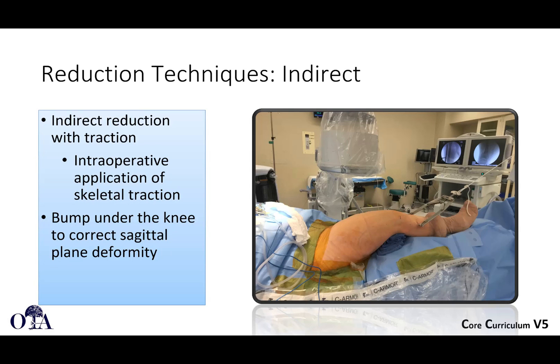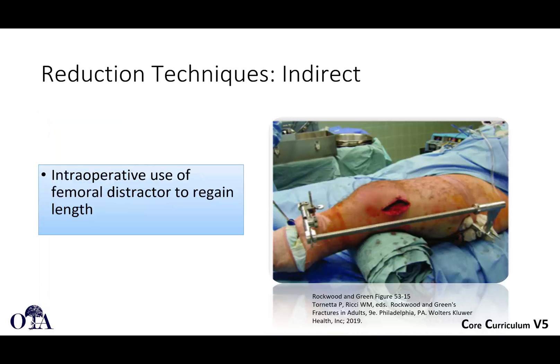You have to be careful because you're not seeing the bone directly and must rely on imaging. Indirect reduction techniques can be done with traction. Here you see an example of intraoperative skeletal traction with a bump under the knee to correct sagittal plane deformity, and use of a large distractor to regain length. You can use bumps, traction, fixators, and distractors to help with reduction before doing minimally invasive plating.